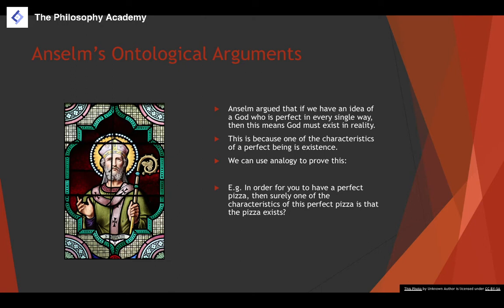To illustrate this, consider the analogy of a perfect pizza. In order to have a perfect pizza, surely one of its characteristics is that it actually exists. If I'm just imagining a perfect pizza, the real version of that perfect pizza would be better than the one in my imagination. So existence has to be one of the characteristics for something to be perfect.